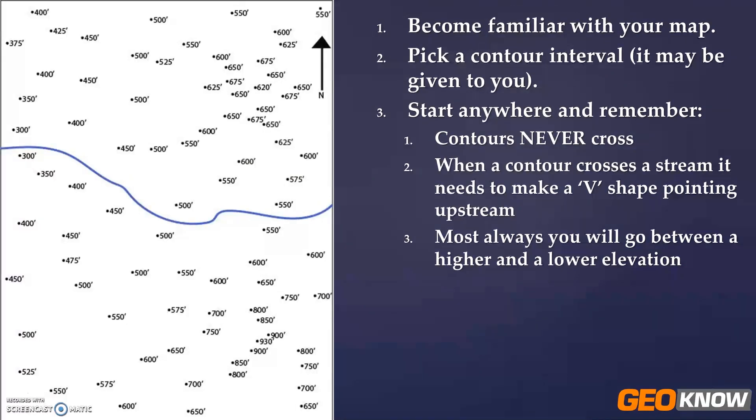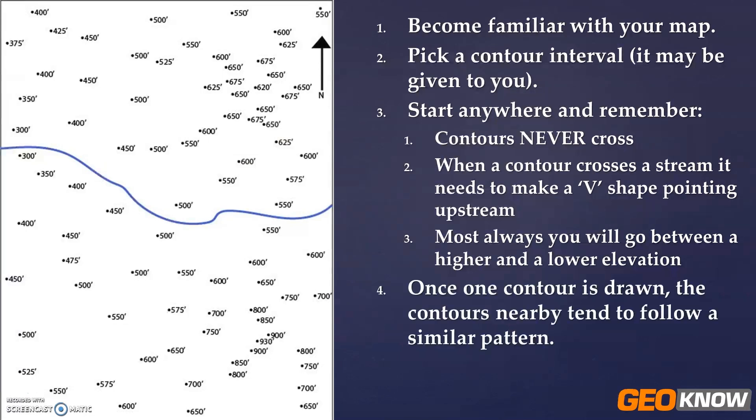Just remember as you're contouring, the contours never cross. When you cross a stream you have to make a V-shape upstream, or a cat ear as I like to say. Most always you're going to go between a higher and a lower elevation. And once one contour is drawn, the contours nearby tend to follow a similar pattern.